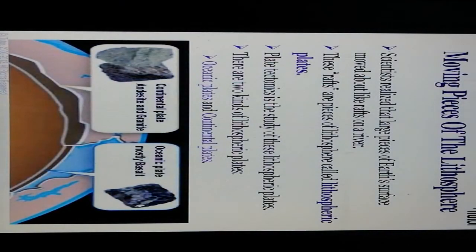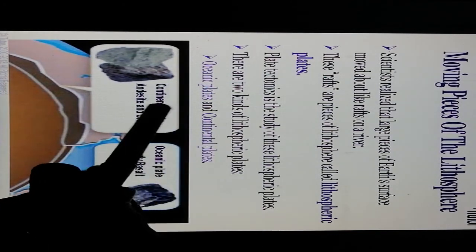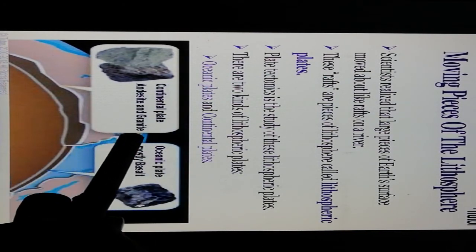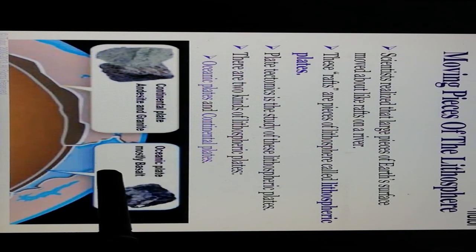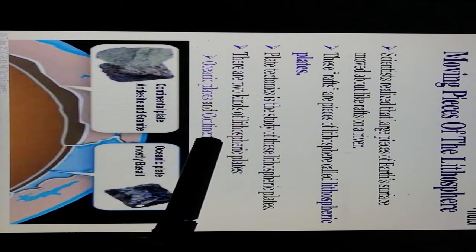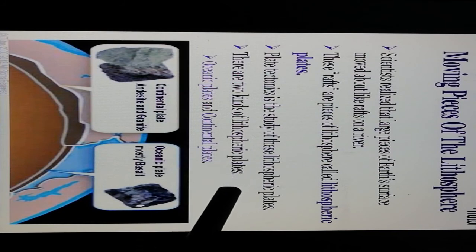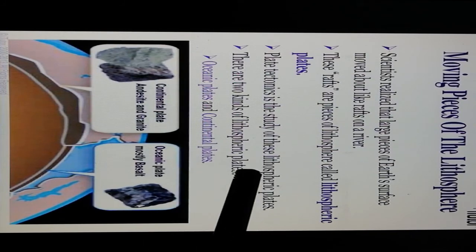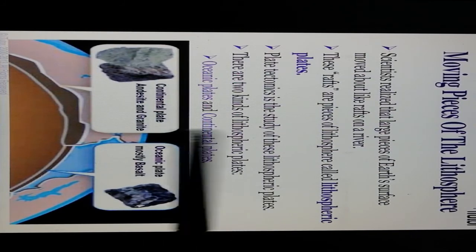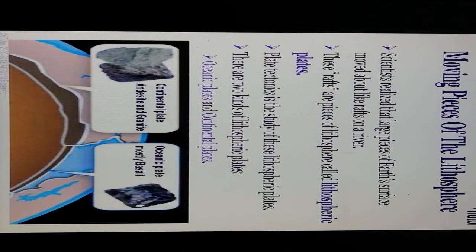Moving pieces of the lithosphere: scientists realized that large pieces of the Earth's surface move about like rafts on a river. These rafts are pieces of lithosphere called lithospheric plates. Continental plates are made of andesite and granite-forming rocks, while oceanic plates are mostly basalt. Plate tectonics is the study of lithospheric plates. There are two kinds: oceanic plates and continental plates.